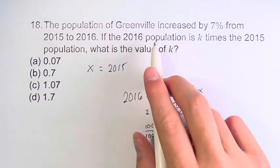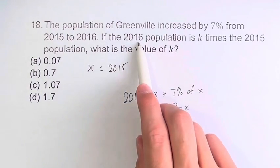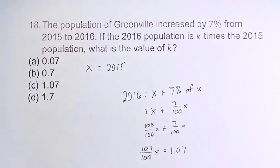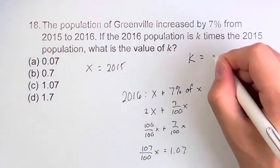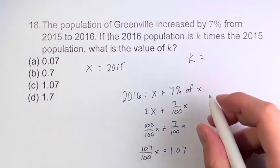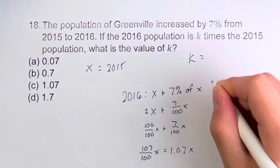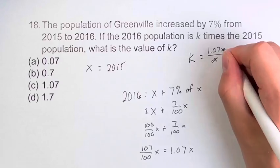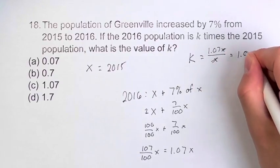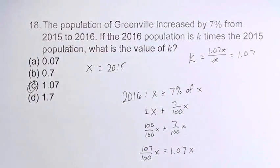Now, the 2016 population is k times the 2015 population. Therefore, k is equal to the ratio between them. So, 1.07x divided by x — these cancel, and we're left with just 1.07. This is the value of k. C is your final answer.